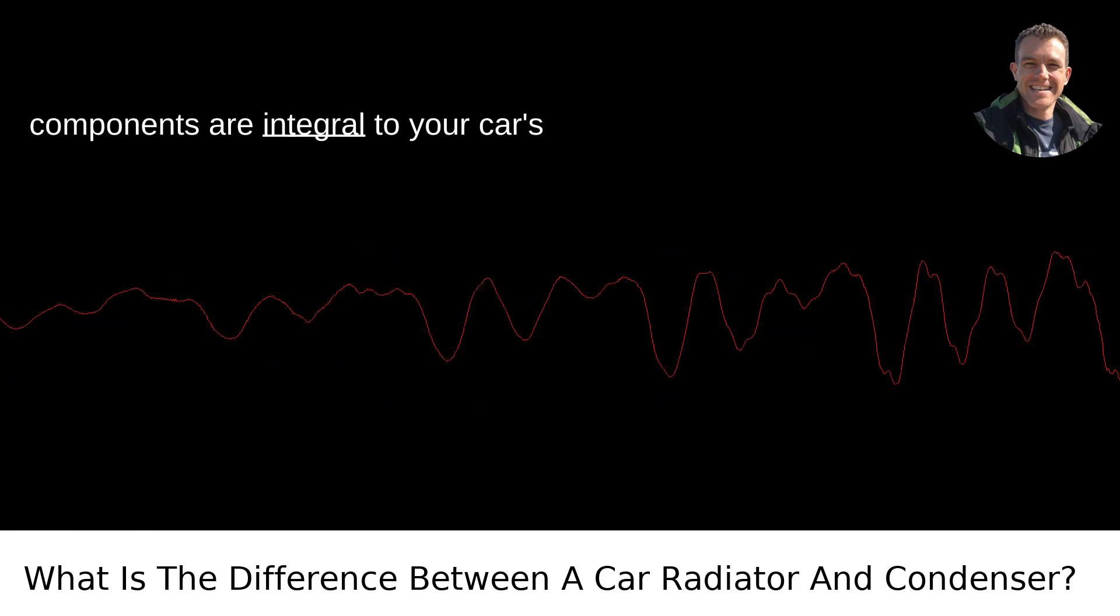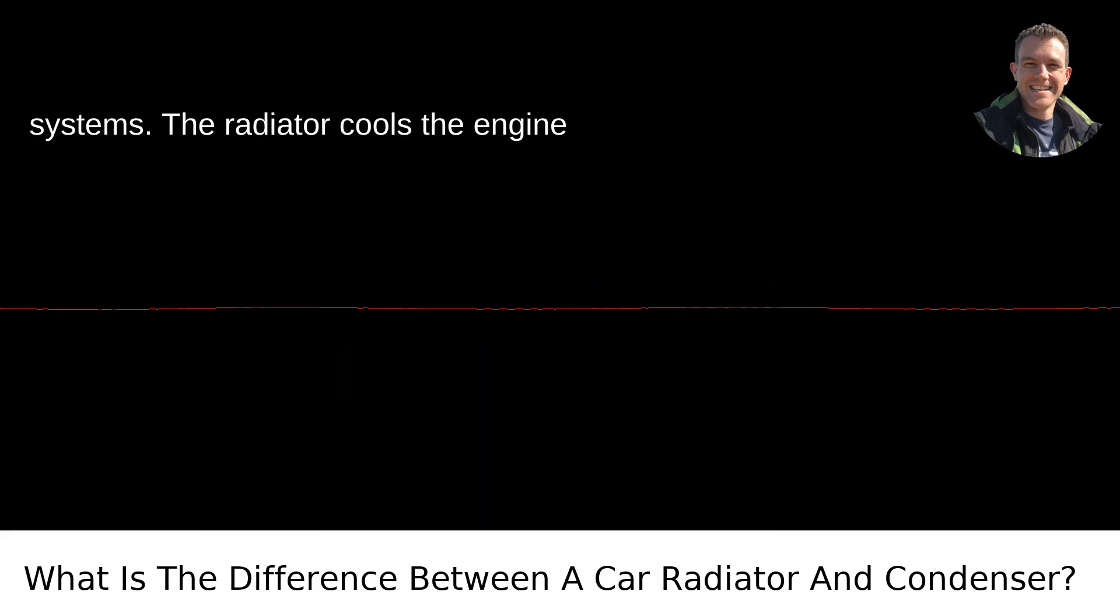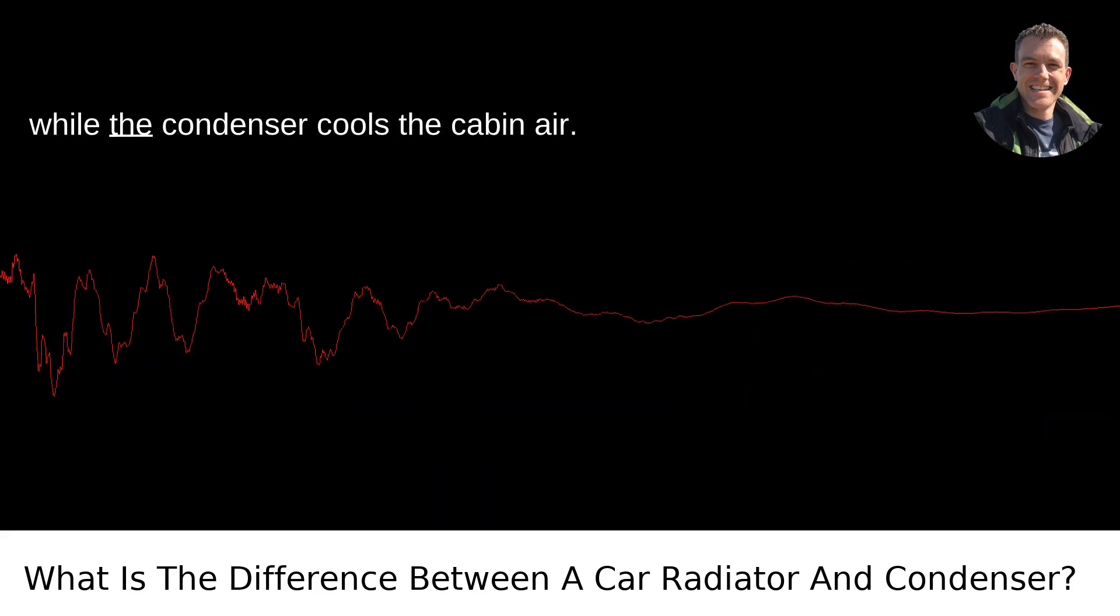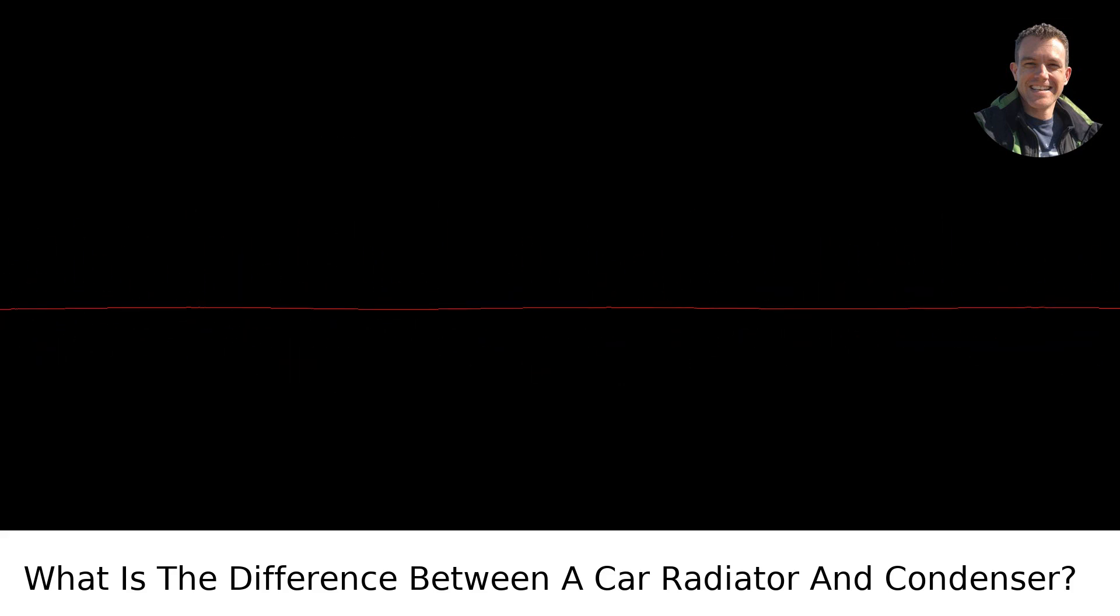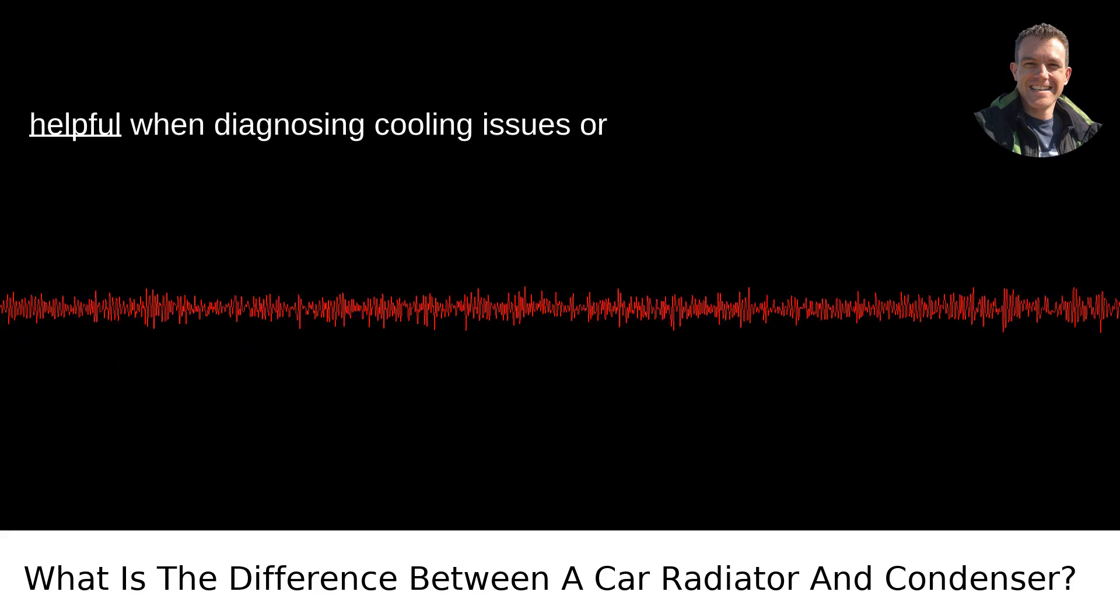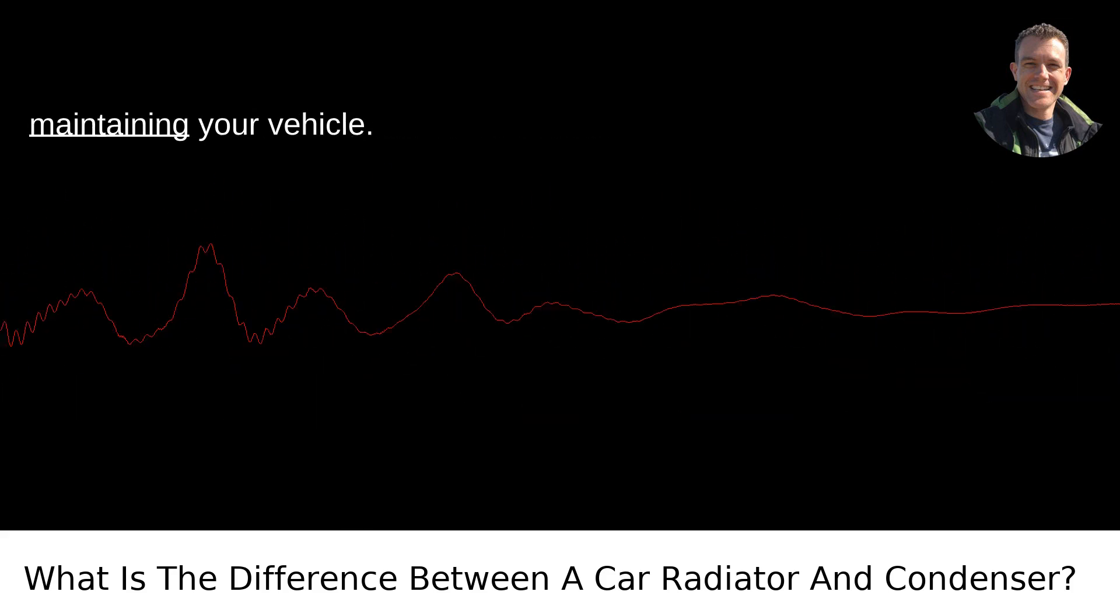In summary, both components are integral to your car's performance, but operate in separate systems. The radiator cools the engine, while the condenser cools the cabin air. Understanding these differences can be helpful when diagnosing cooling issues or maintaining your vehicle.